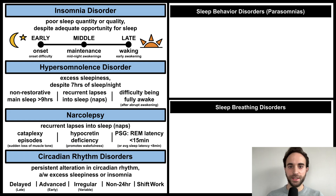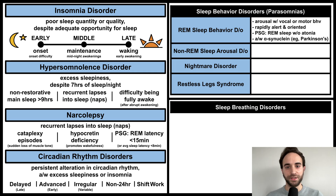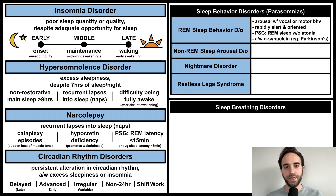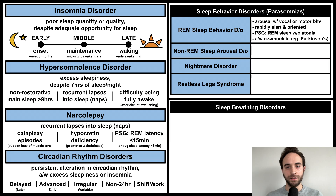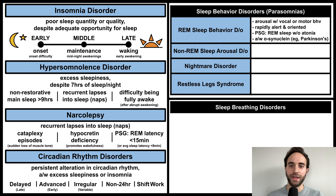These are the core sleep disorders. Let's next cover the sleep behavior disorders, also known as the parasomnias. REM sleep behavior disorder involves midnight arousals with vocalizations or complex motor behaviors, such as acting out dreams, kicking, thrashing, or shouting. The patient may awaken during these episodes and when they do, they are rapidly alert and oriented. Pathologically, this disorder involves REM sleep without the usual muscle atonia, and is associated with alpha-synuclein diseases, such as Parkinson's disease.